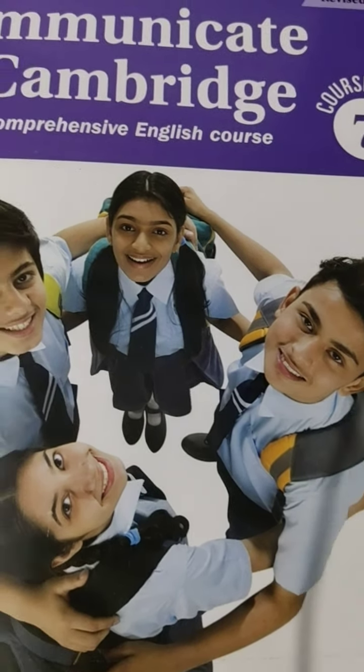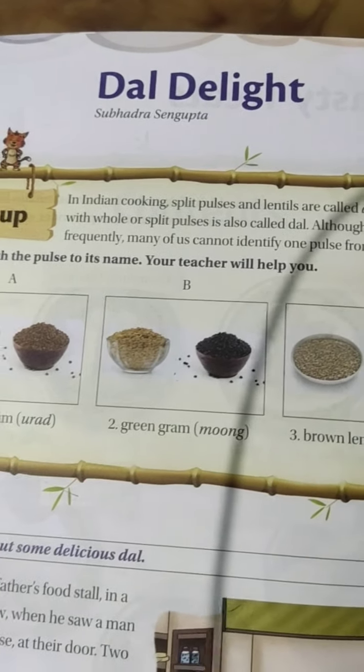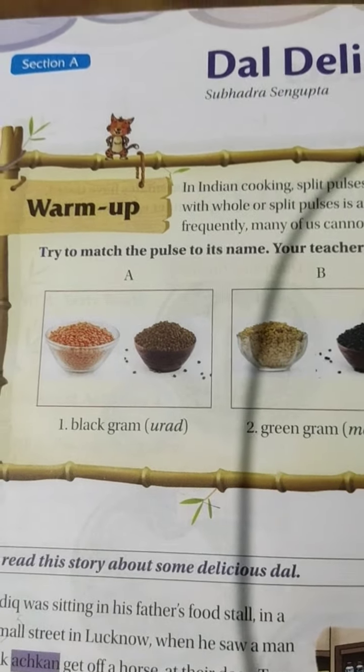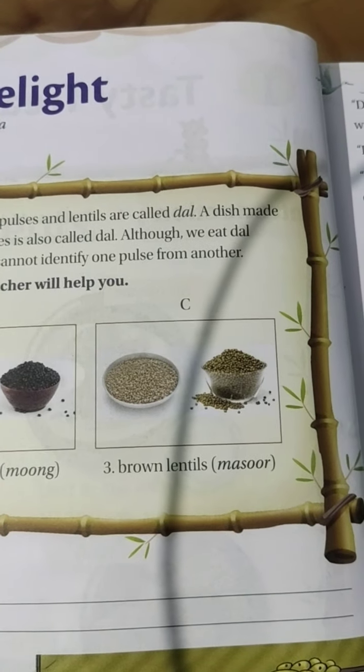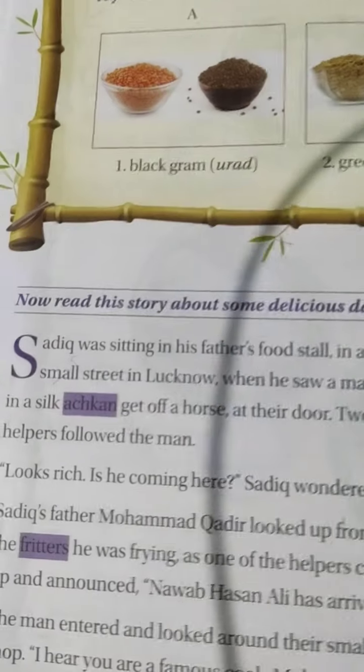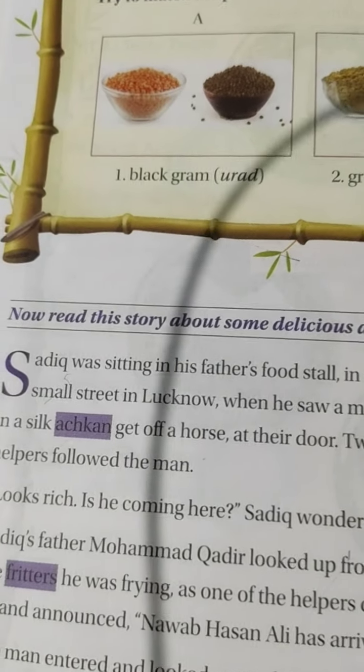Dull Delight. Children, it is a very interesting story. Before we start, we will see different types of dals. First, you see the picture. One: black gram means urad. Second: green gram, moong. And third: brown lentils, masoor dal. So this chapter is about all these things.